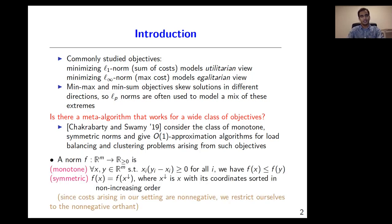Formally, a norm f is monotone if increasing a coordinate does not lead to a decrease in the norm. The norm is symmetric if it is invariant under permutation of coordinates. I'll often use the notation x with the superscript of a downward arrow as shorthand for the vector x with its coordinates sorted in non-increasing order. Since the costs arising in our setting are non-negative, we'll restrict ourselves to the non-negative orthant.